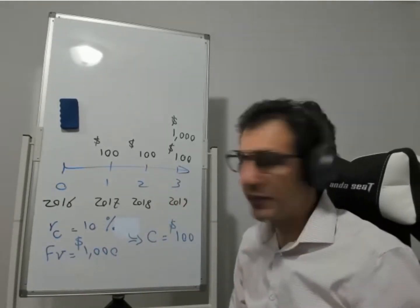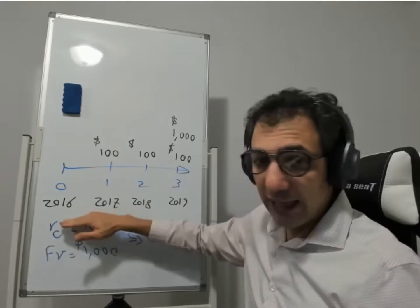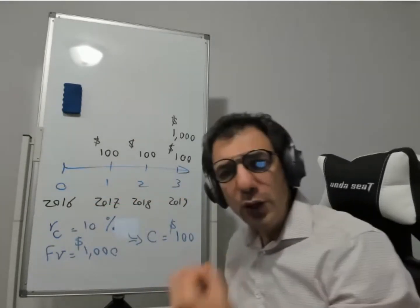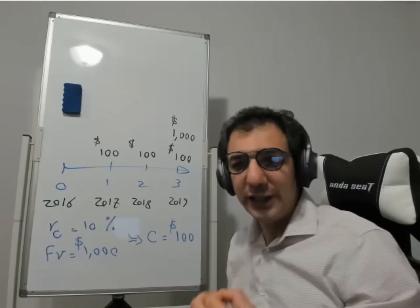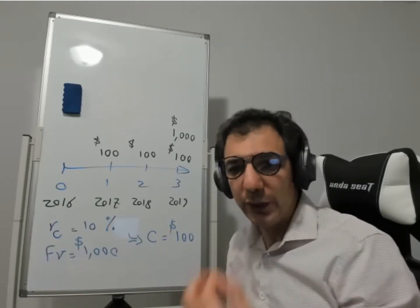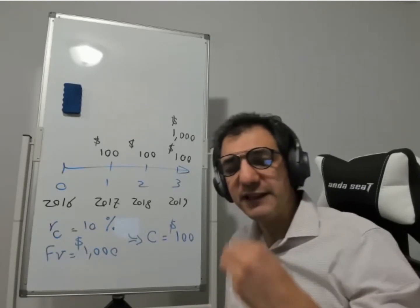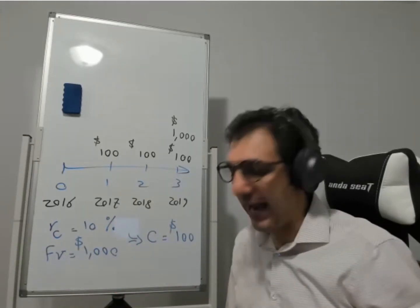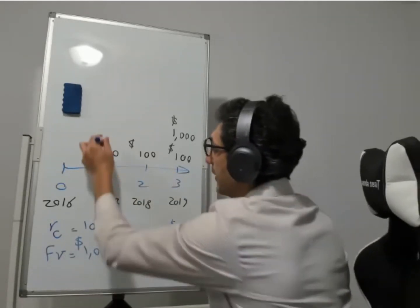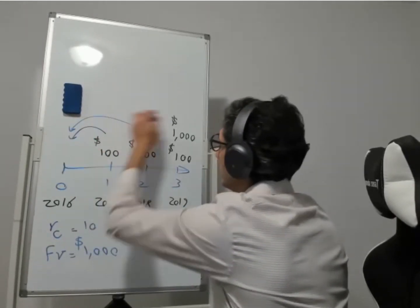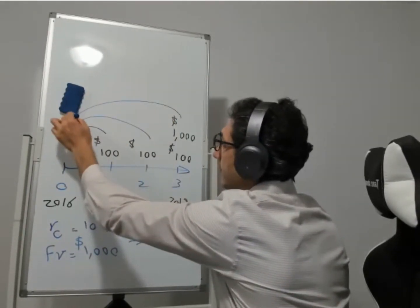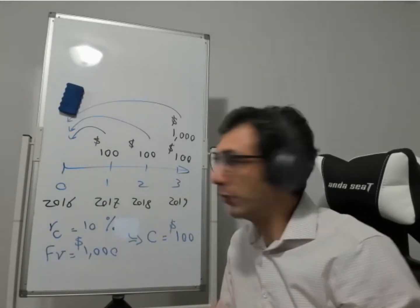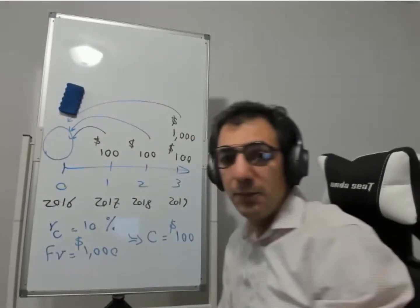This is the cash flow stream you expect to receive. The value of the bond is not the same as the face value — we'll discuss valuation in detail in lesson two. For now, remember that the value of the bond is based on the present value of all these cash flows. In other words, you need to find the present value of all future cash flows you are going to receive. If you discount back all these cash flows and add them together, you will find the bond price.